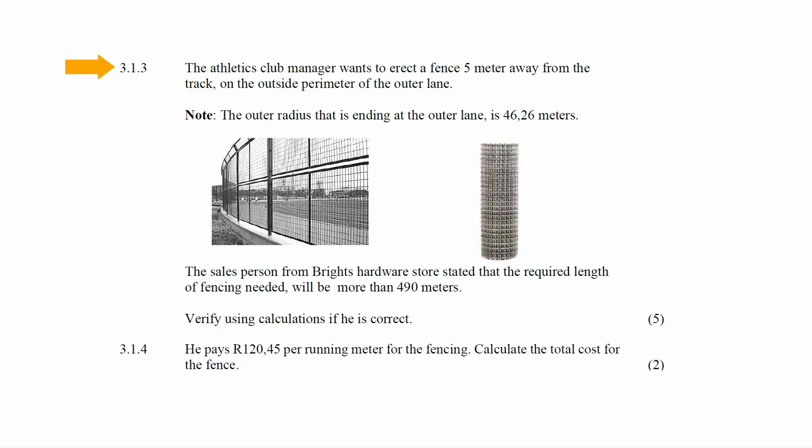In question 3.1.3, the athletics club manager wants to erect a fence 5 meters away from the track on the outside perimeter of the outer lane. The outer radius ending at the outer lane is 46.26 meters. The salesperson from Bright's Hardware stated the required fencing will be more than 490 meters — you must verify this by calculation.